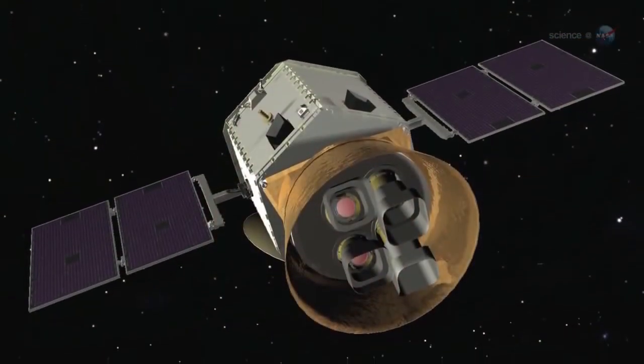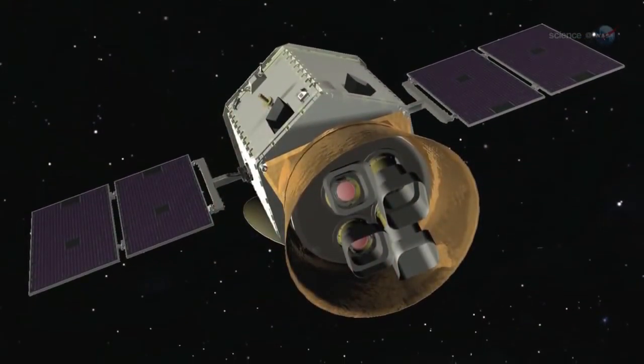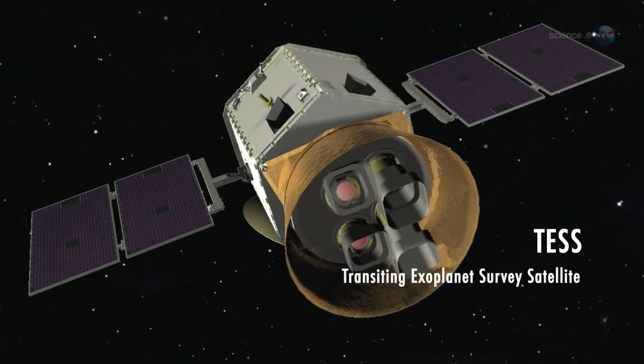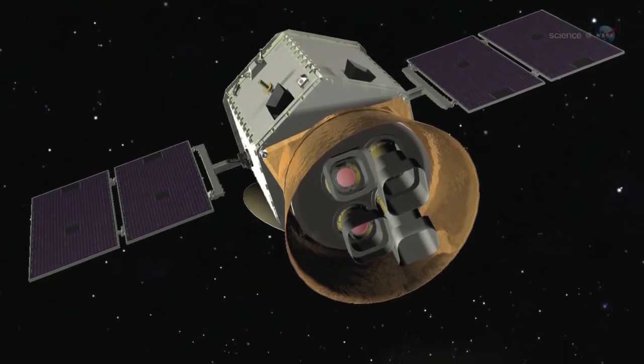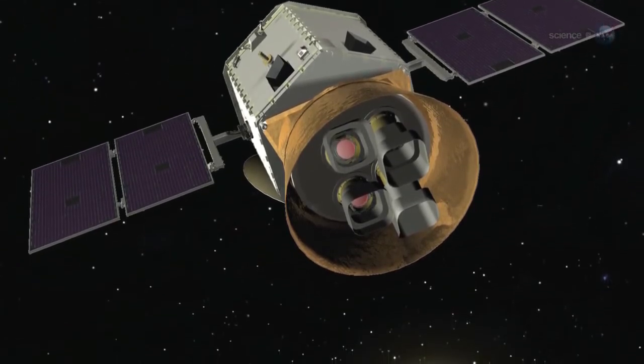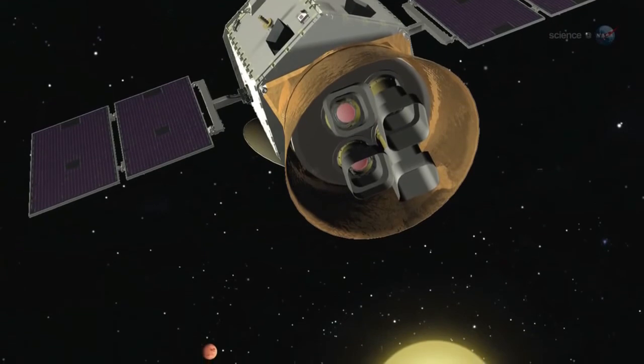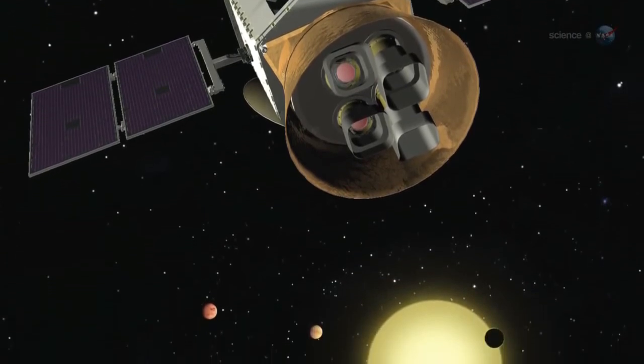NASA is also considering an observatory named TESS, the Transiting Exoplanet Survey Satellite. Supported in part by Google, the MIT-led mission is specifically designed to find exoplanets in the local galactic neighborhood. TESS would study hundreds of stars within 50 light-years of Earth, close enough to study in some detail.